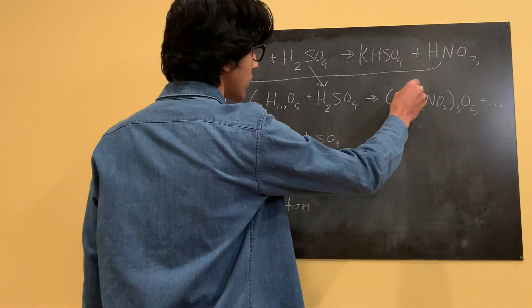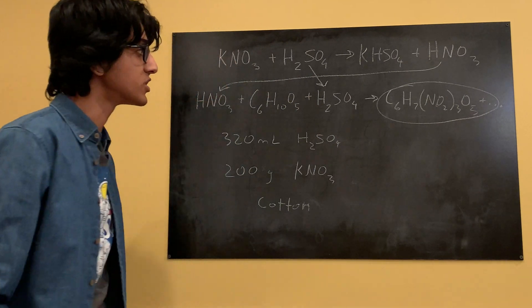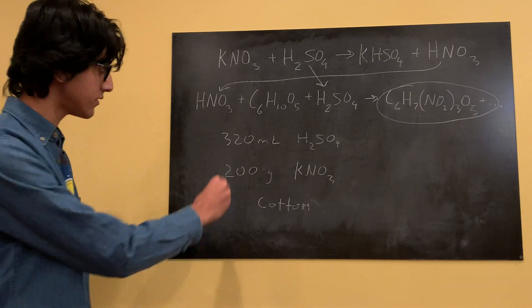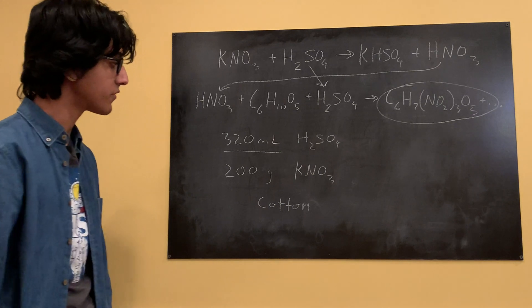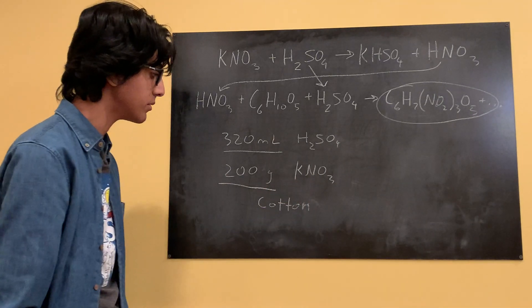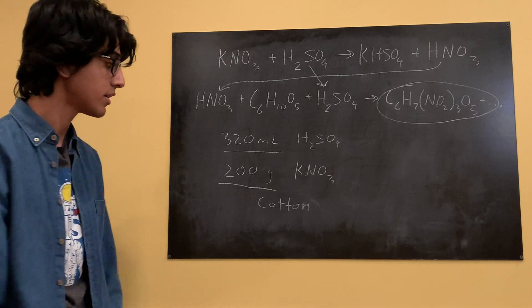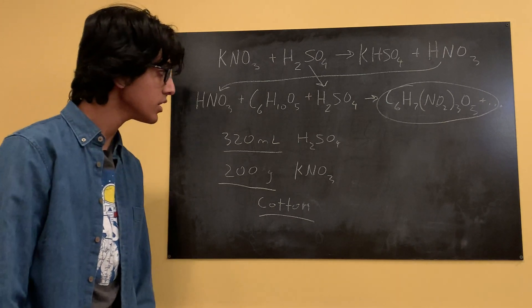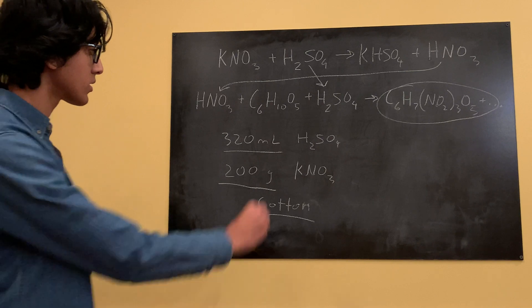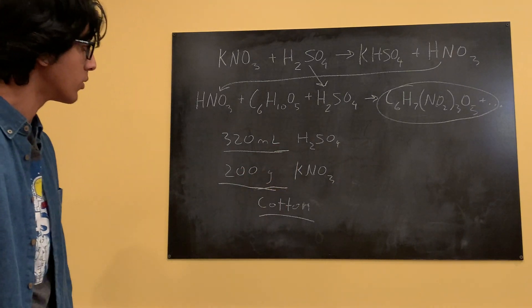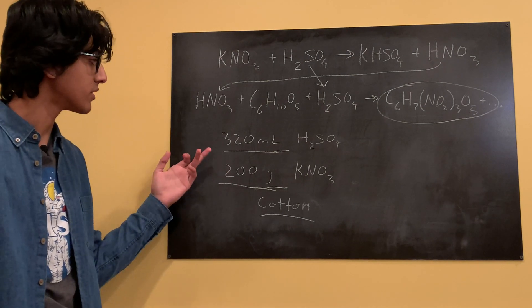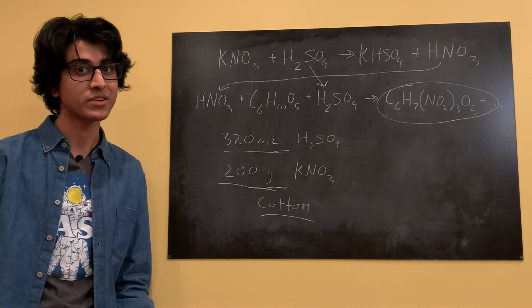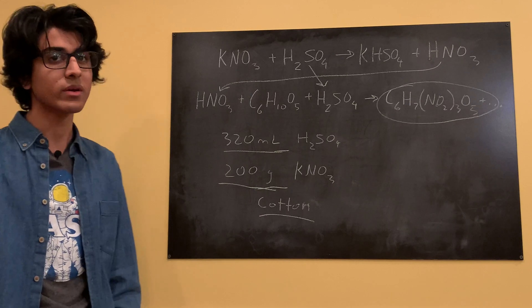That will give us our final product of C6H7N3O11, which is our nitrocellulose. The proportions we're going to be using are 320 milliliters of sulfuric acid and 200 grams of potassium nitrate. I didn't measure exactly how much cotton we're going to use — I kind of just filled in as much as I could fit. We're using pretty large proportions mostly because I have some future videos planned for this nitrocellulose, and we'll be doing some fun demonstrations as well.